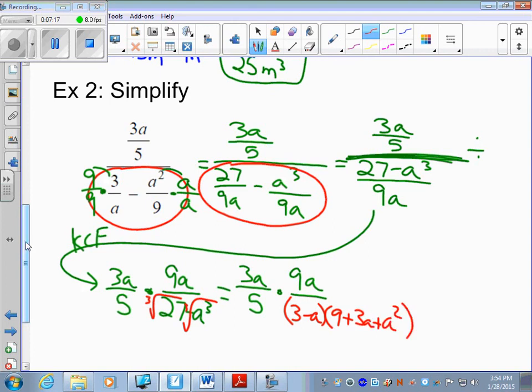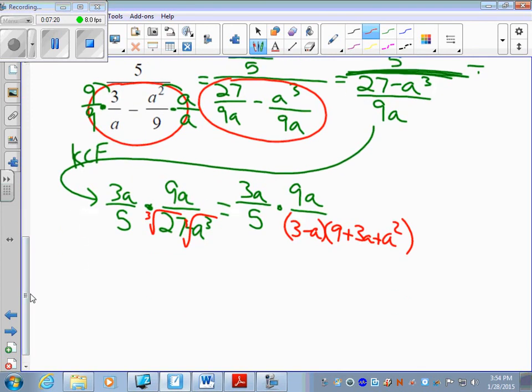And now I look to see if there's anything in my numerator and denominator that are same that I can simplify. Unfortunately, again, I don't see anything. So the final answer: I would just multiply out the numerator. 3a times 9a, 27a squared over 5. I would never multiply out the denominators. Never see a need for it. And that would be it.